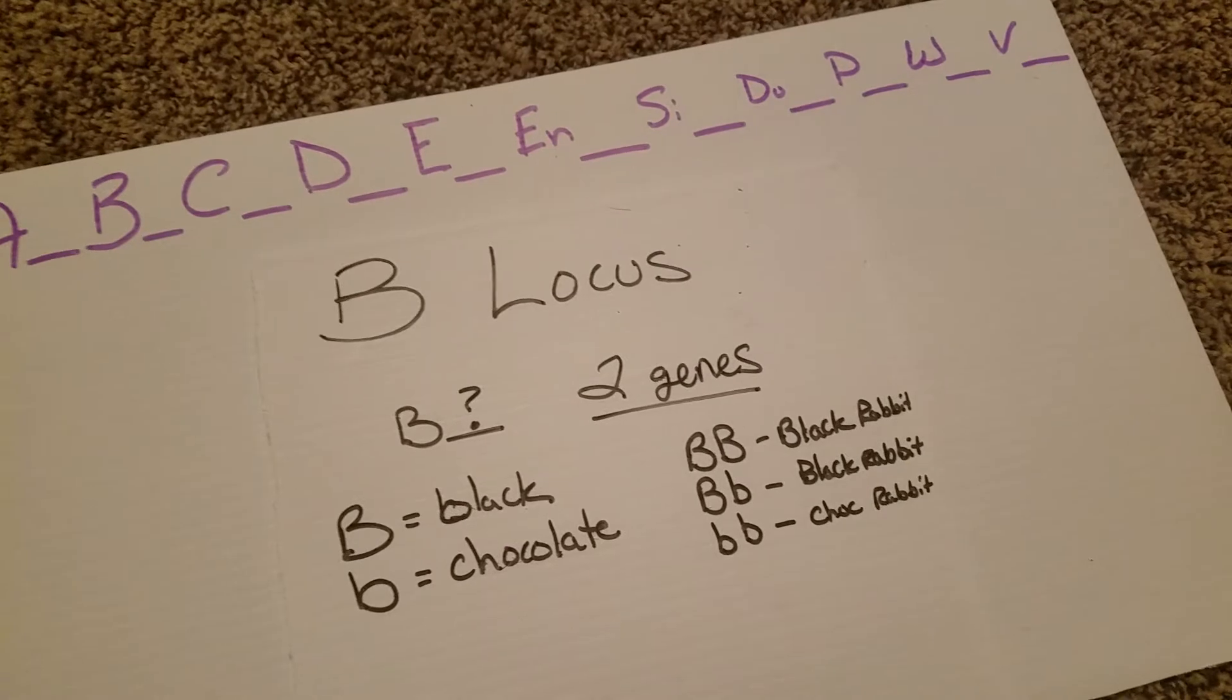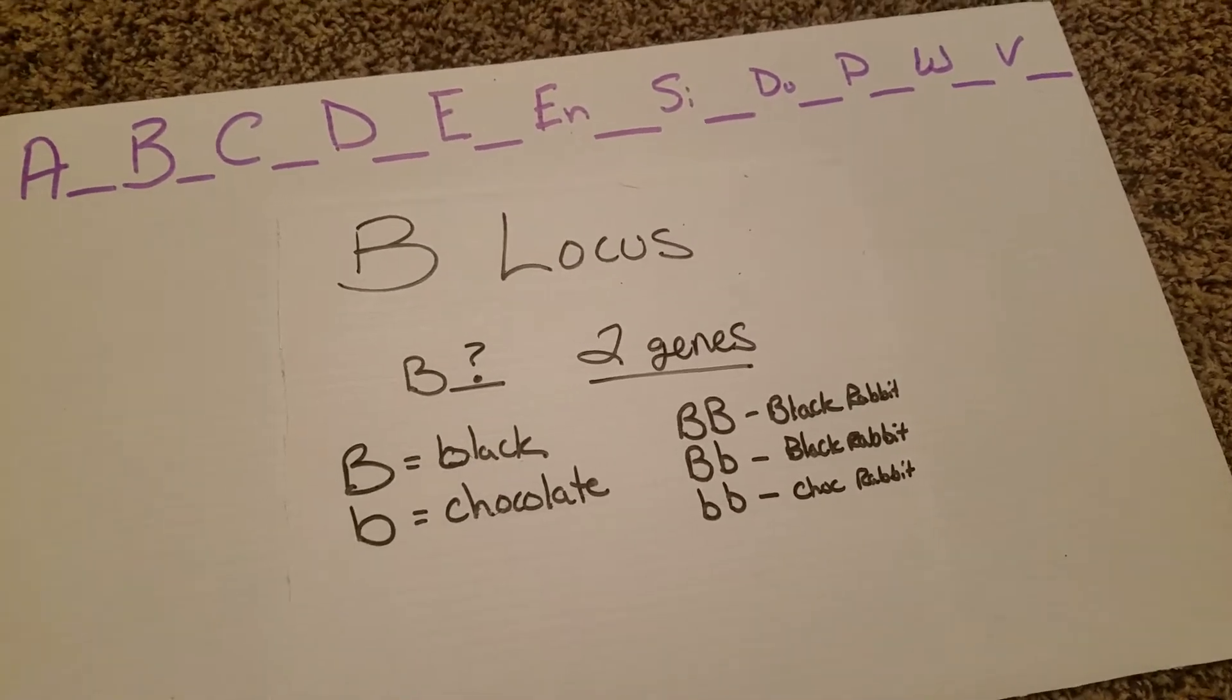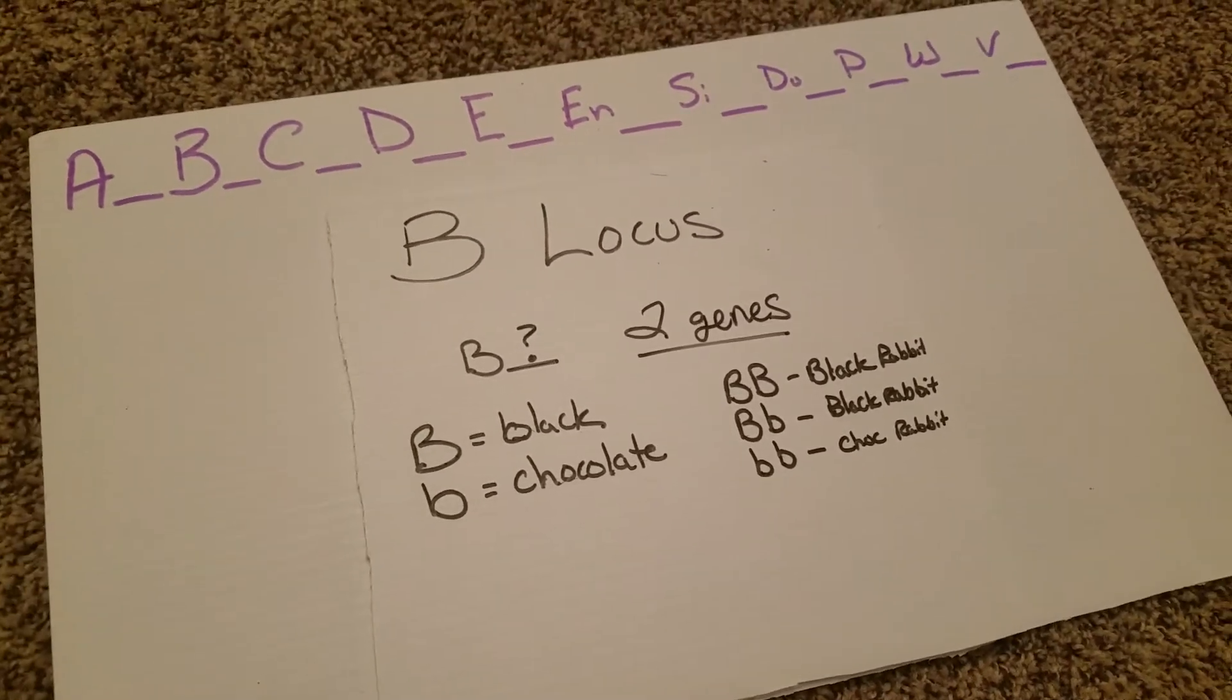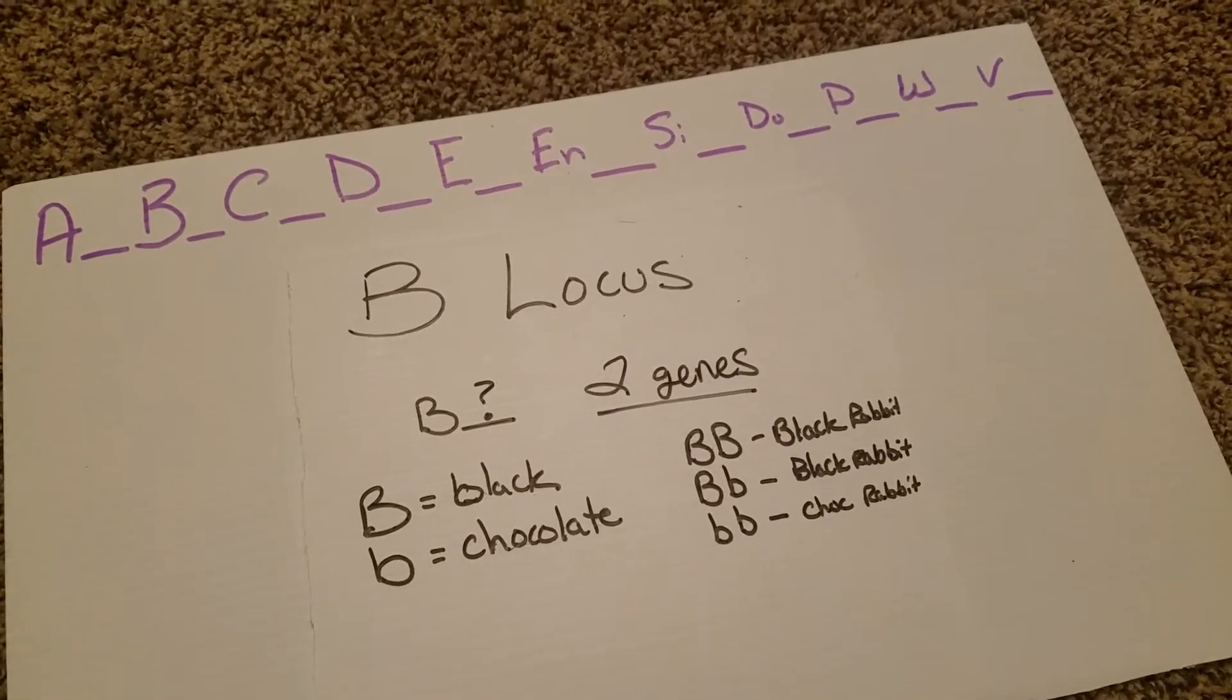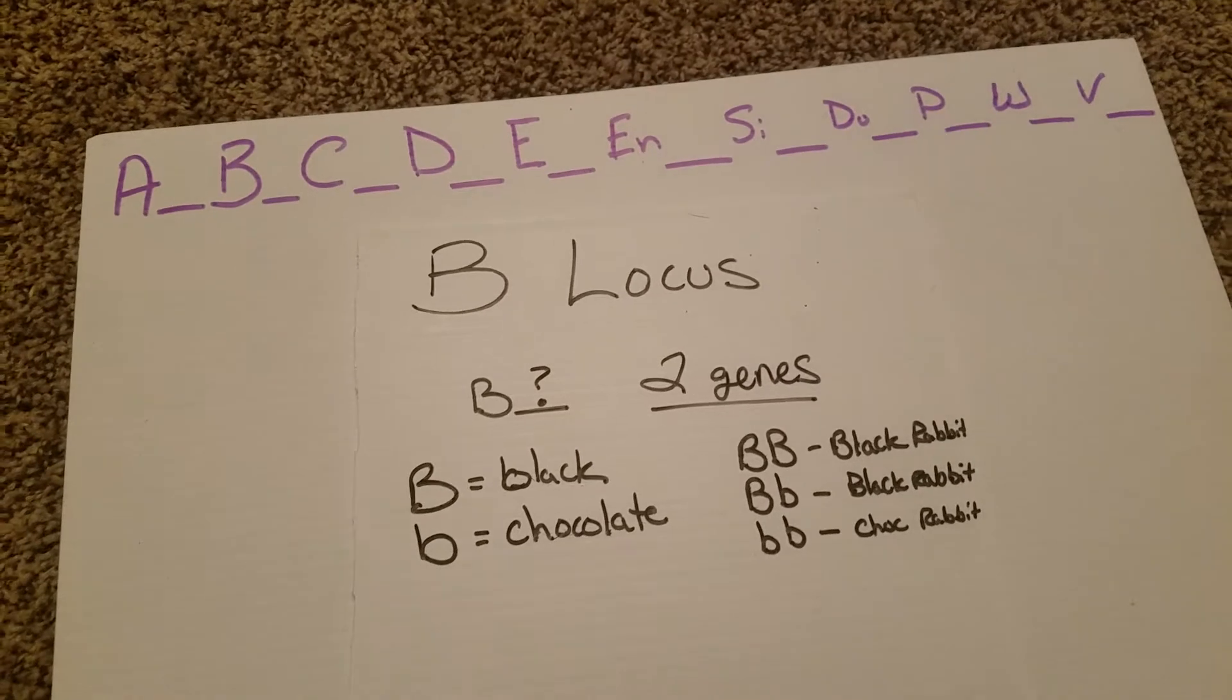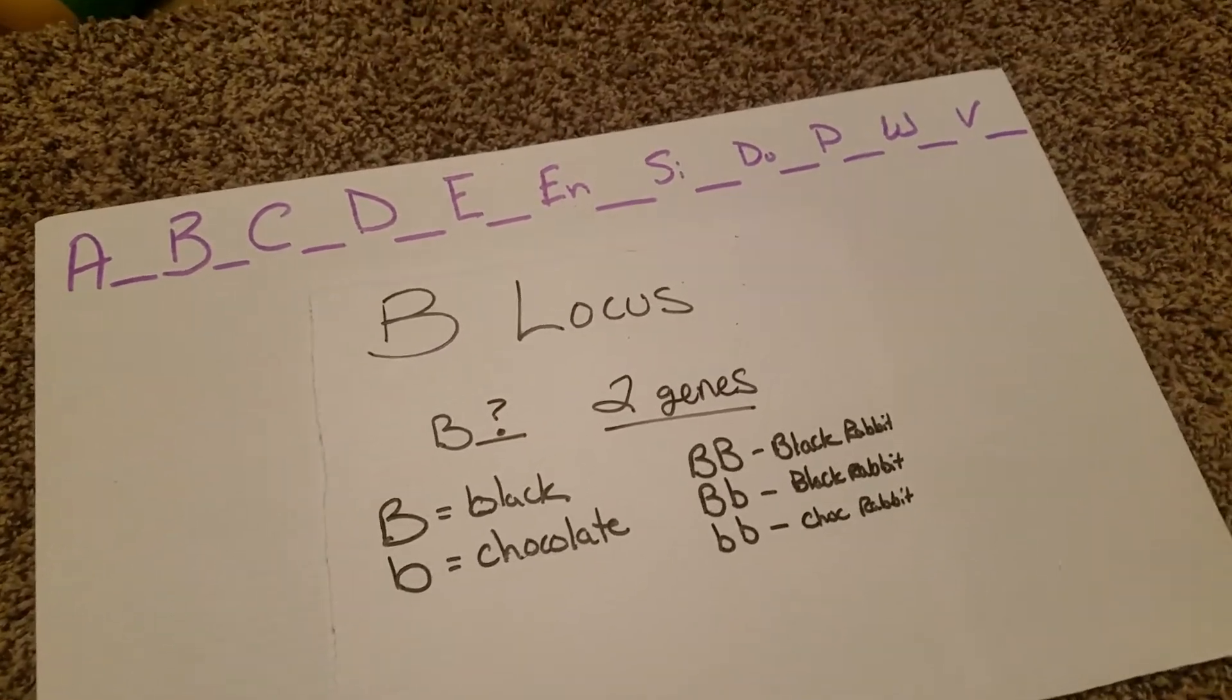Today, we're going to talk about the B locus. The B locus is entirely going to set whether your rabbit is based off of a black color or off of a chocolate color.